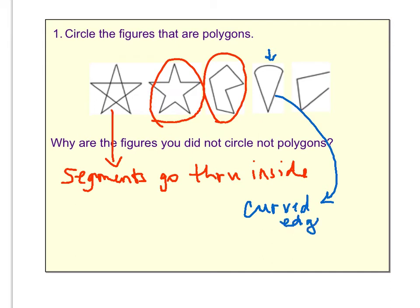So that one, the curved edge causes it not to be a polygon. And then the last one is not a polygon, obviously, because of that gap. So the segments are not connected, or you could just say there's a hole in it.